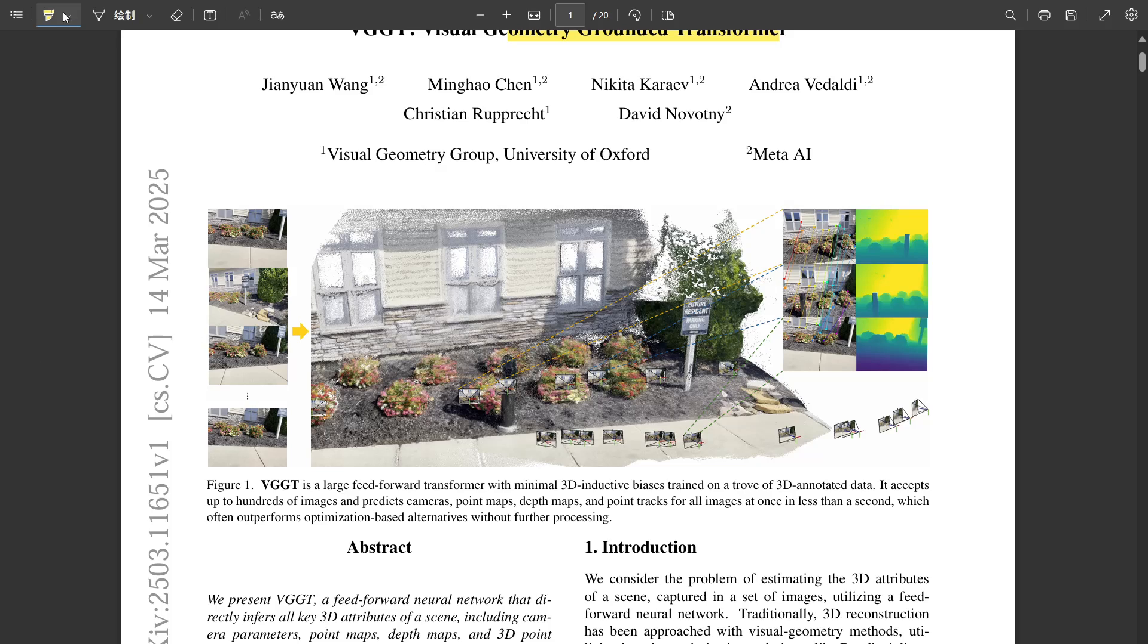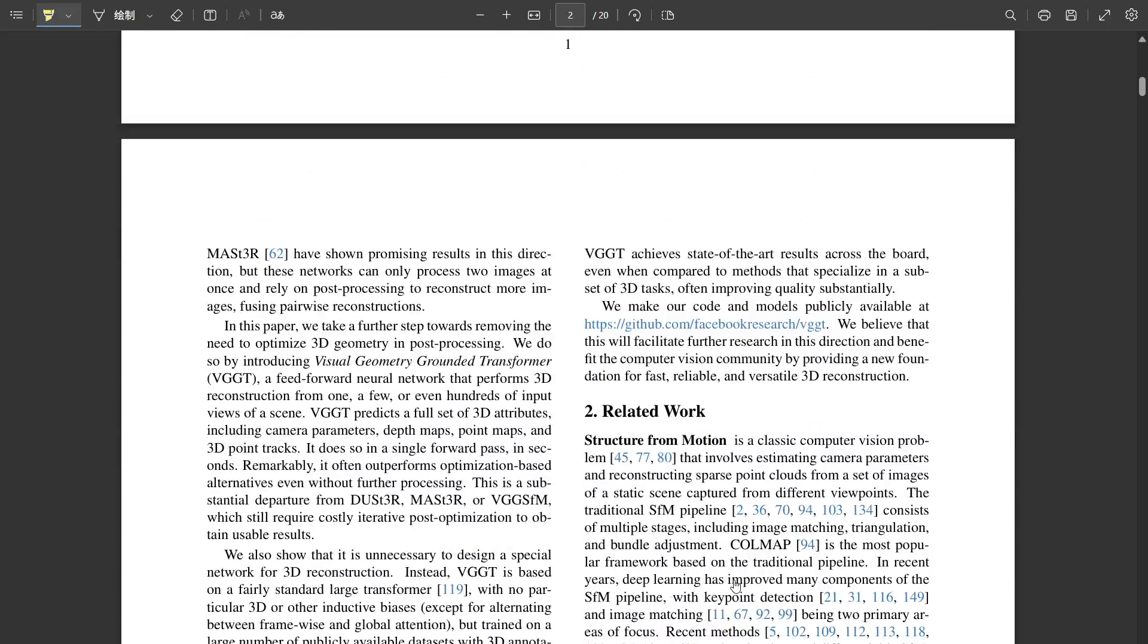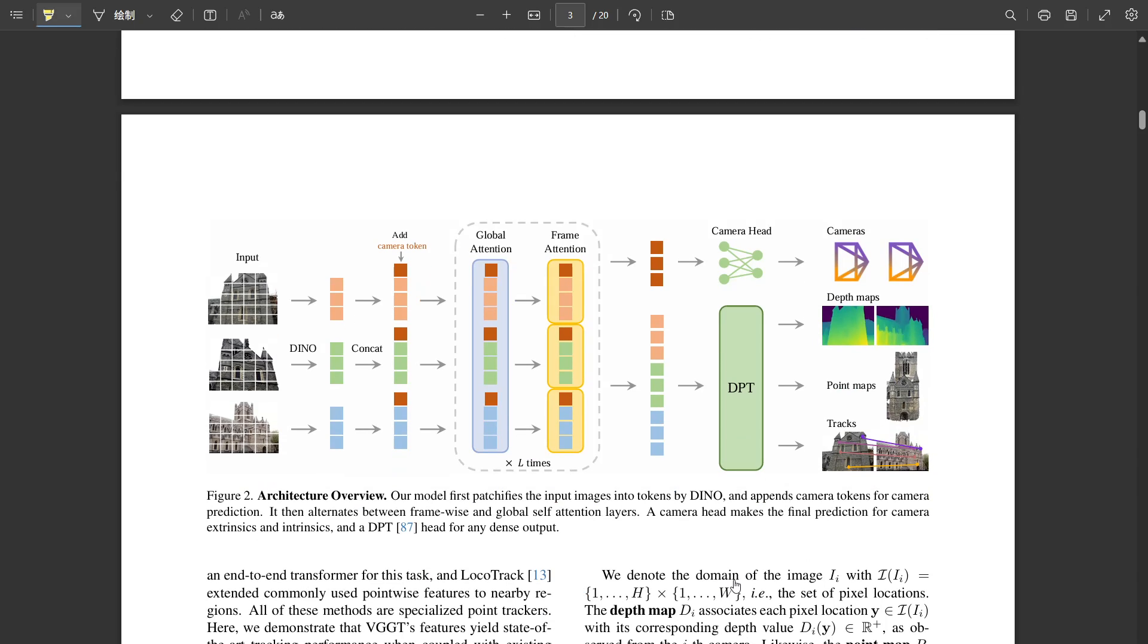So how does VGGT try to break through? What's actually inside this thing that lets it take this neural-first path? Okay, the core idea is it's architected as a large feed-forward transformer network. Think models like GPT or vision transformers, but applied to this multi-view geometry problem. Feed-forward meaning it just processes the input once, straight through, no loops, no iterations. Pretty much. It takes all the input images—and the sources say it can handle dozens, even hundreds—processes them together, and in that single pass it predicts the key 3D outputs. Whoa, okay. Hundreds of images, single pass? That is a huge difference from just looking at two images at a time. It really is. That pairwise approach often needed those extra fusion steps we mentioned. VGGT aims to produce usable camera poses, depth maps, even 3D point locations for all the images directly from the network in like seconds. Usable results directly. Okay, that's the goal.